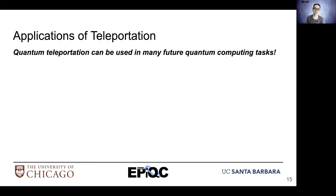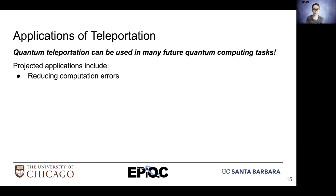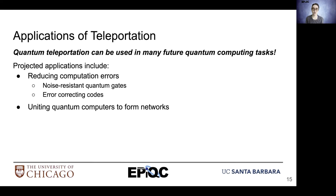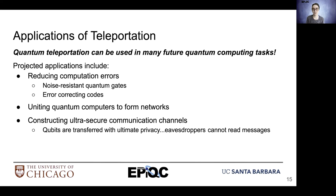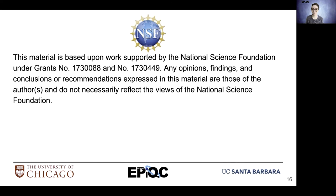Some applications of teleportation include reducing computation errors in the form of noise-resistant quantum gates and error-correcting codes. Teleportation can also be used to unite quantum computers to form networks. Additionally, teleportation can be applied to create ultra-secure communications channels, because when qubits are transferred, they're transferred with ultimate privacy — eavesdroppers cannot read the messages.